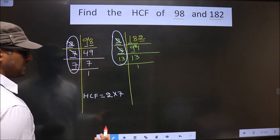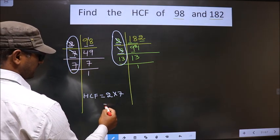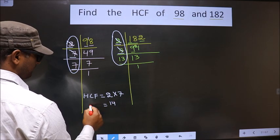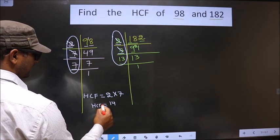No more numbers are present. So, our HCF is 2 into 7, 14. 14 is our HCF.